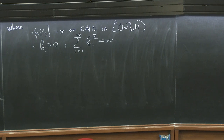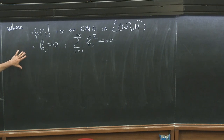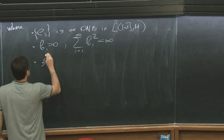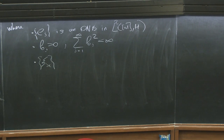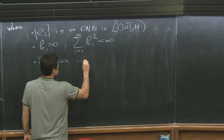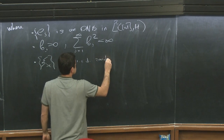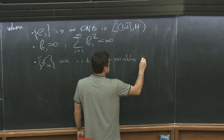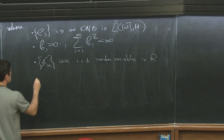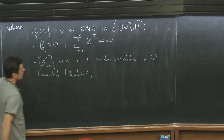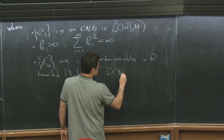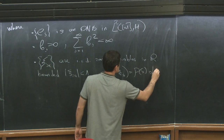All the randomness comes from the coefficients ξ_{jk}, which are independent identically distributed random variables in R that are bounded — for example by 1 — and whose law is absolutely continuous with respect to the Lebesgue measure on the real line. The density is C¹ smooth and positive at zero. This is exactly what we saw in the previous talks.